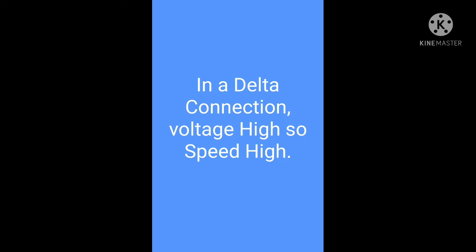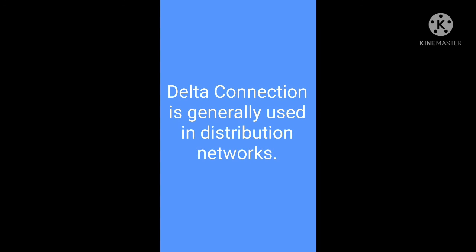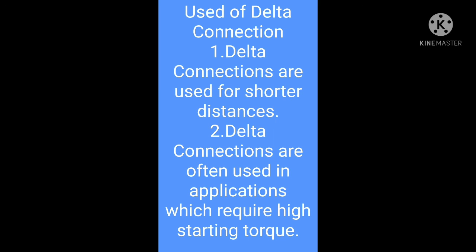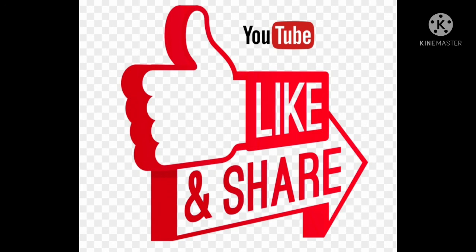In delta connection, the voltage is high, so the speed is also higher. Delta connection is generally used in the distribution network for short distances, and where we need high starting torque, we use delta connection.